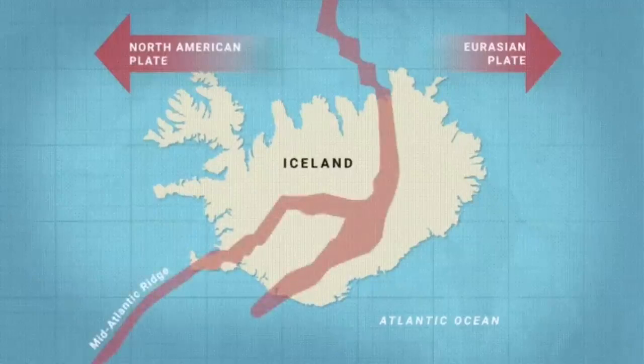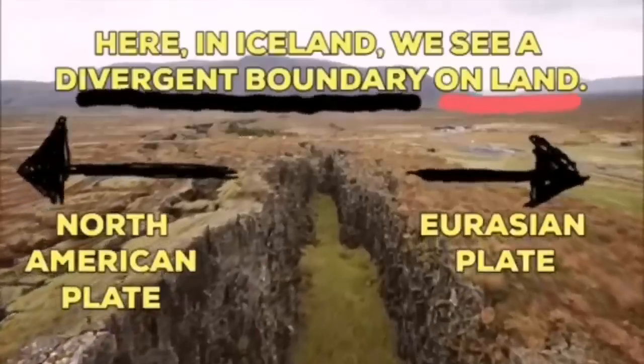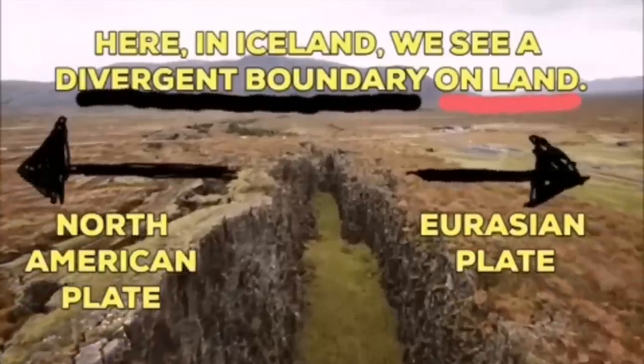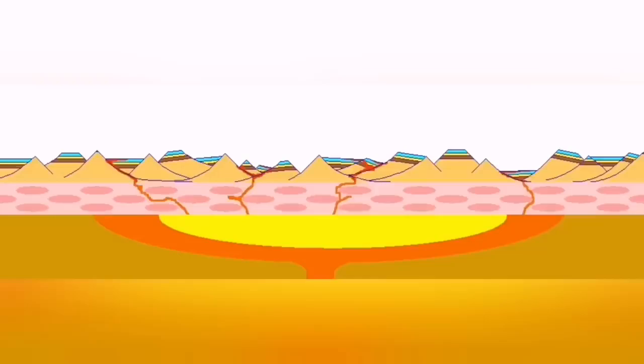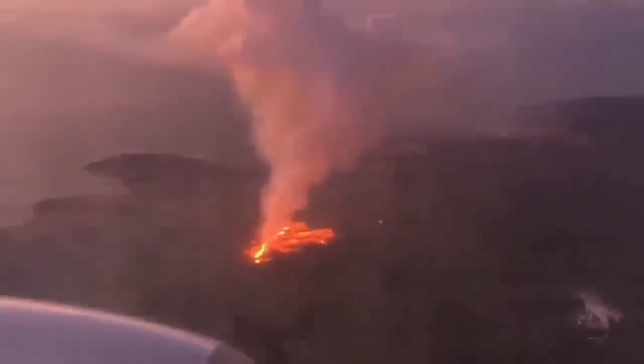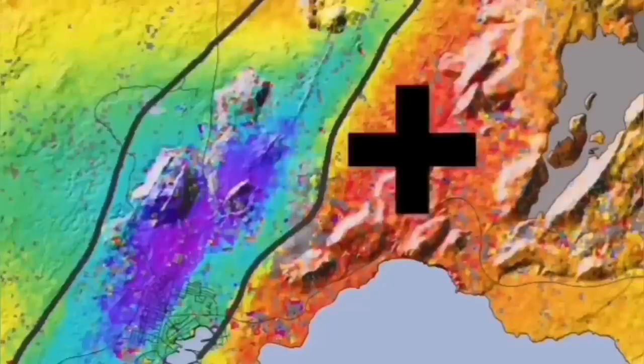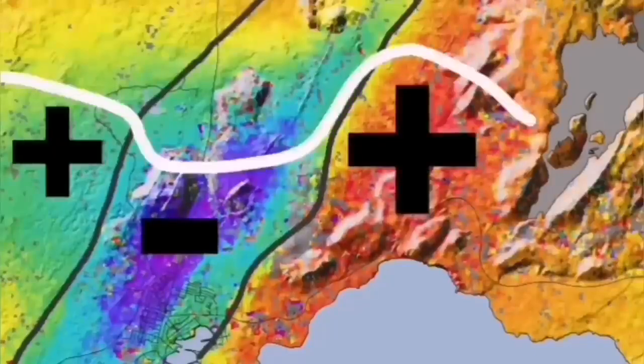Such a thing happens in Iceland, on the land, we can see it. Eurasian plate and North American plate, through these grabens, this is the hollow that you see in the middle, are separating. And through them, the magma forms and rises and creates lava, eruption of the volcano, this is what we call it.